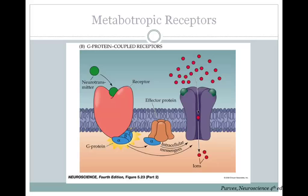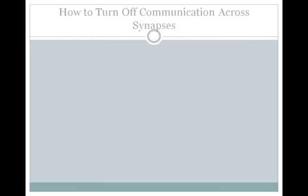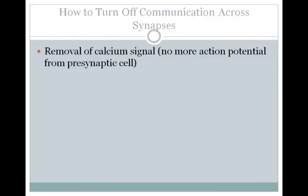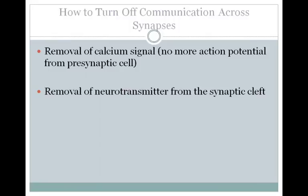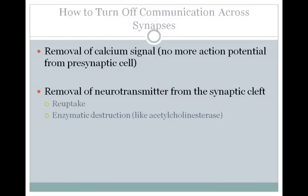Now that we know how neurotransmitters are released and where their site of action is, we're going to talk about how you can turn off communication across synapses. You want synaptic communication to start and stop quickly so that you can have sharp differences in signaling. The first way to turn off synaptic transmission is to remove the calcium signal — without depolarization of the presynaptic bouton, you won't have calcium influx or synaptic vesicle release. Second, you can remove the neurotransmitter from the synaptic cleft: some neurotransmitters are reuptaken into the cell using special reuptake pumps; some are destroyed by an enzyme, for instance acetylcholine is destroyed by acetylcholinesterase in the synaptic cleft itself; and finally, the neurotransmitter can diffuse away from the synaptic junction.